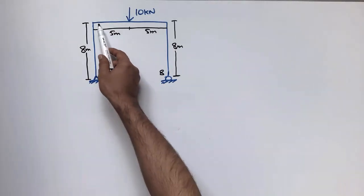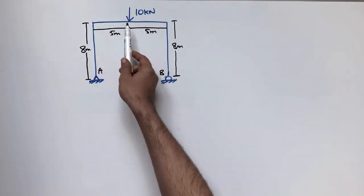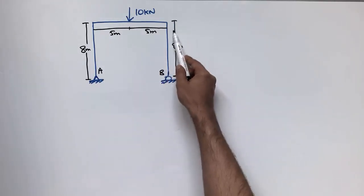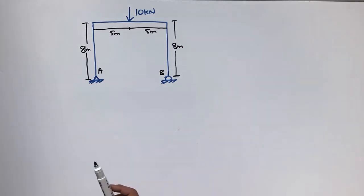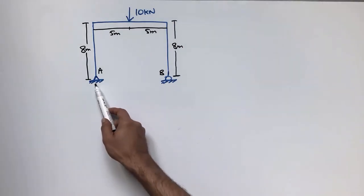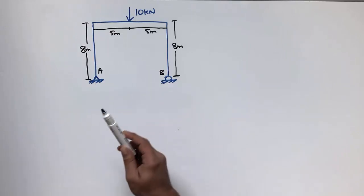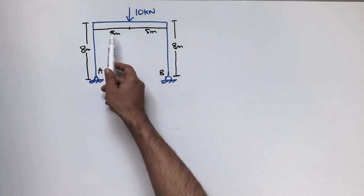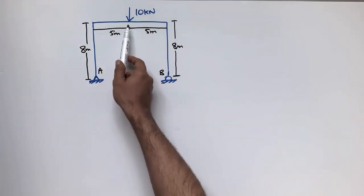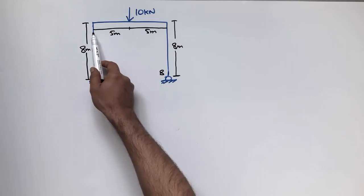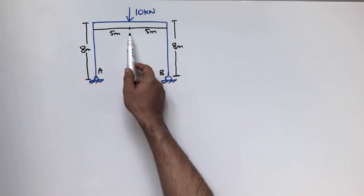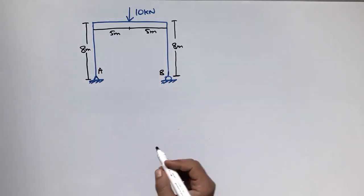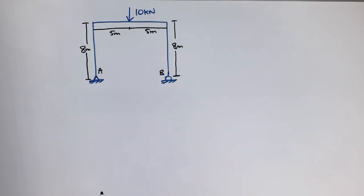Here, one horizontal member is the beam and it takes a load of 10kN at the center. The two vertical members are the columns, which are compression members. They are supported by a hinge support and a roller support. The column height is 8 meters and the beam total length is 10 meters, with the load acting at 5 meters from each end.